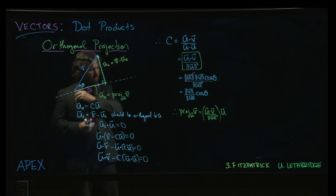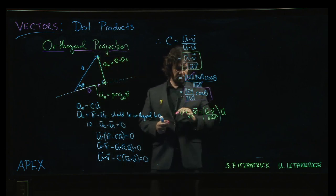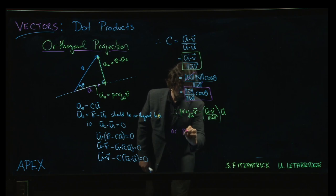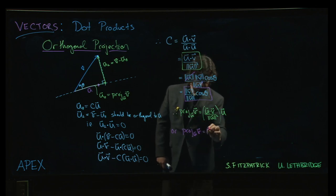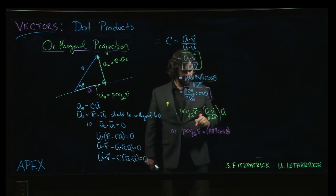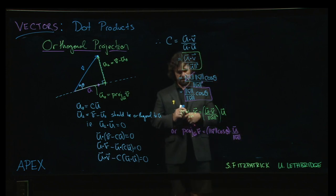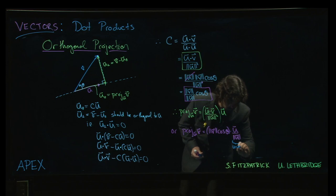I will add one short remark that if you were to use this version instead, then what you would get is, we can write it like this. I'm going to write it as the magnitude of v times cos theta. And that one over magnitude of u, I'm going to put it over here. And the reason I'm going to put it over there is just to emphasize that this bit is actually a unit vector. So that's a unit vector.